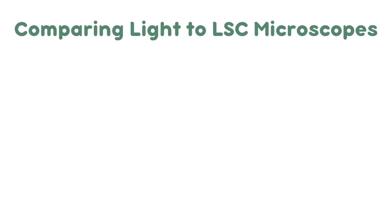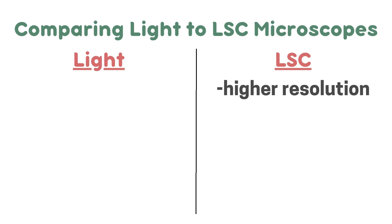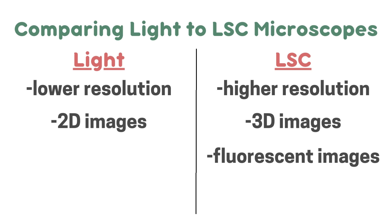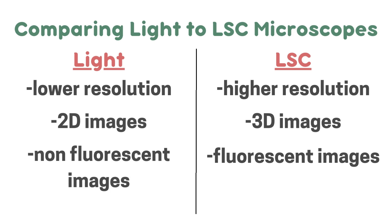Now we're going to compare the light microscope to the laser scanning confocal microscope. The LSC has a slightly higher resolution than the light microscope, so it will produce slightly clearer images. The light microscope produces 2D images, whilst the LSC produces 3D images. This is because the lasers from the LSC hit the specimen at different times and at different points, creating a 3D image over time. The LSC also produces fluorescent images due to the laser, whilst the light microscope produces coloured but non-fluorescent images.